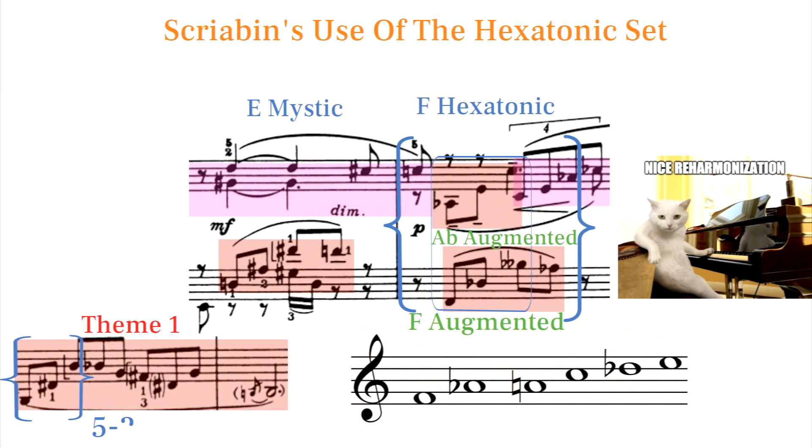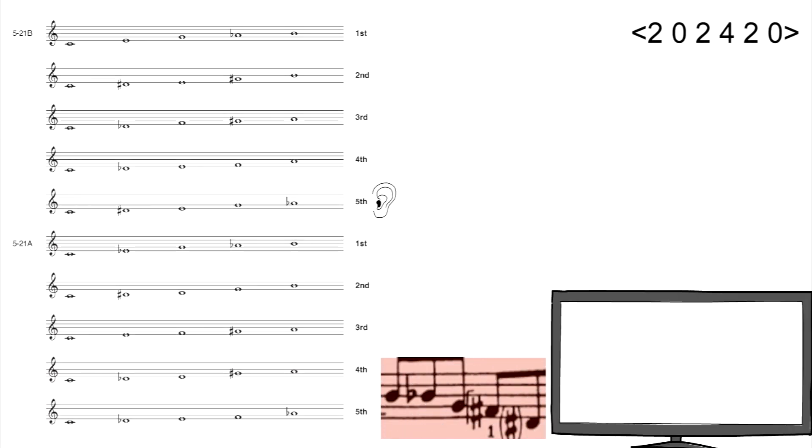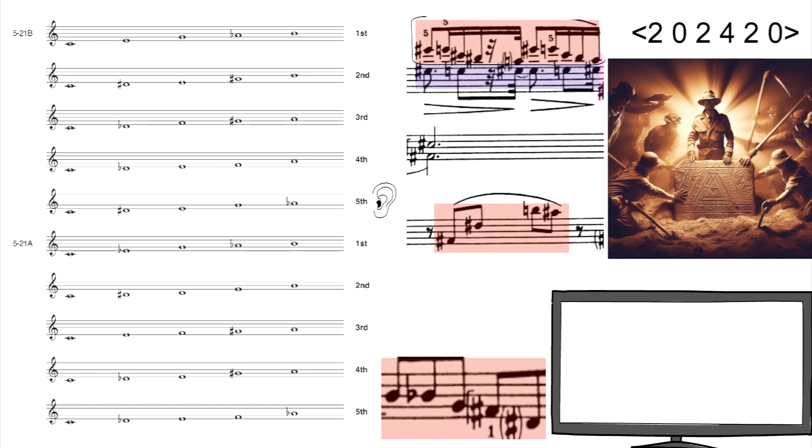This is the set that Scriabin uses in theme 1 of Sonata 8. When I hear those five notes walking down, I imagine an ancient, mysterious relic being uncovered. Here's one of my favorite uses of that part of the motif being used.